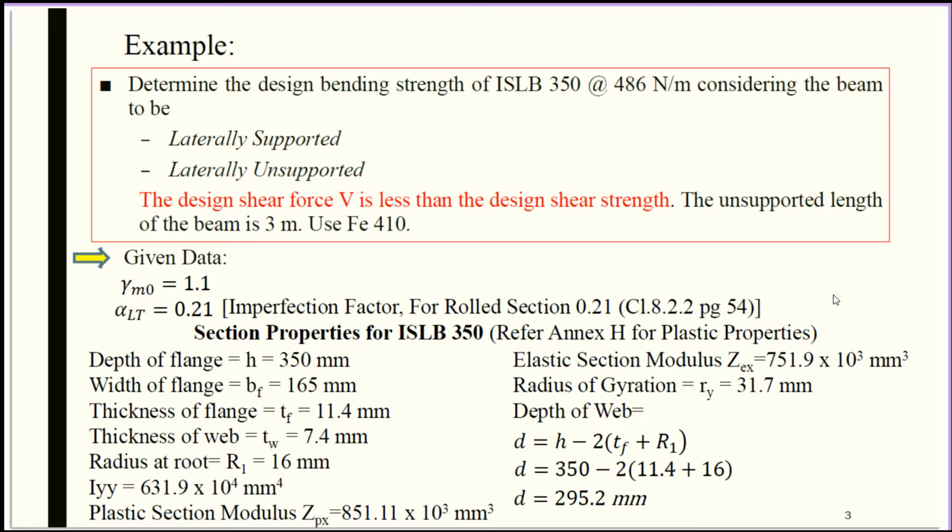For ISLB 350 at 486 Newton per meter: depth of flange h = 350 mm, width of flange BF = 165 mm, thickness of flange TF = 11.4 mm, thickness of web TW = 7.4 mm, radius at root R1 = 16 mm, Iyy = 631.9 × 10⁴ mm⁴.